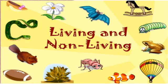Everything that you see around you can be divided into living and non-living things. The things that you see around you in your house — your table, your chair, your computer, your mobile — everything comes under non-living things.